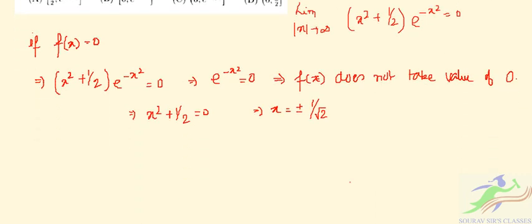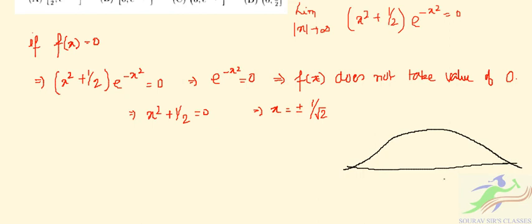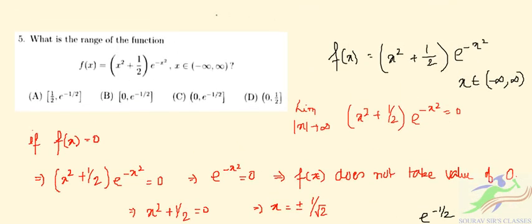Drawing the function f(x), at x = 1/√2 the function equals e^(−1/2). The range of the function is therefore (0, e^(−1/2)]. So f(x) ∈ (0, e^(−1/2)], and the correct option is option B.